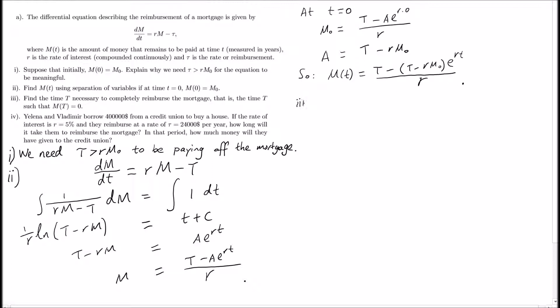For part 3, it asks us how long does it take to pay off the mortgage. In this case, what's the time t when M(t) equals 0? Well, we have (T - (T - rM_0)e^(rt))/r equals 0.